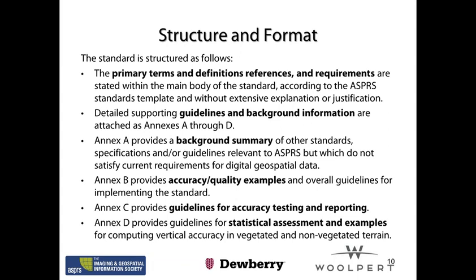The standard structure has primary terms and definitions in the main body, with detailed supporting guidelines and background information attached as Annexes A through D. Annex A provides a background summary of other relevant standards and specifications. Annex B provides accuracy quality examples and overall guidelines for implementing the standard. Annex C provides guidelines for accuracy testing and reporting. Annex D provides guidelines for statistical assessment and examples for computing vertical accuracy in vegetated and non-vegetated terrain.